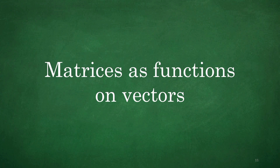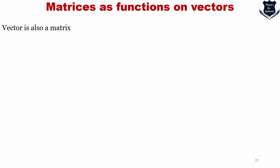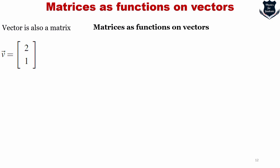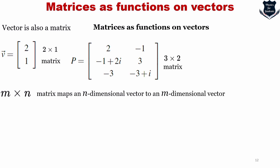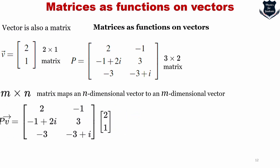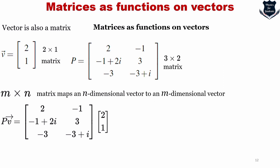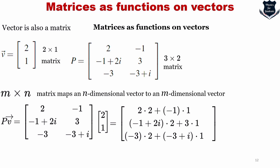There are further important observations. Matrices can act as functions on vectors. Since a vector is also a matrix that has only one column, we can think of matrices as functions on vectors. For example, if P equals the vector [2, 1] — a 2×1 matrix — and M is a 3×2 matrix, then the matrix M maps an N-dimensional vector to an M-dimensional vector. We can write this with vector notation and verify the calculation.